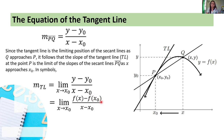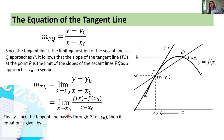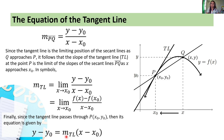Finally, since the tangent line passes through point P(x₀, y₀), its equation is given by y minus y₀ equals the slope of the tangent line times the quantity (x minus x₀). This is our point-slope form — these are what we'll use in the upcoming examples.